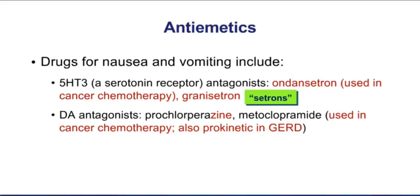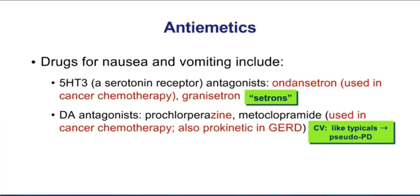Metoclopramide, a drug known as a prokinetic because it has the ability to increase GI motility, has been used in GERD. But watch out for the side effect of either of these drugs — since they work like typical antipsychotics and block the D2 receptor, that can cause movement disorders, including pseudoparkinsonism. So with chronic therapy with either of these dopamine receptor blockers, watch out for movement disorders.